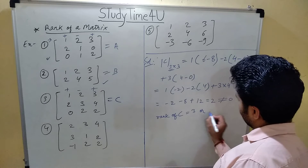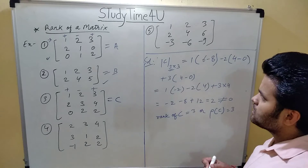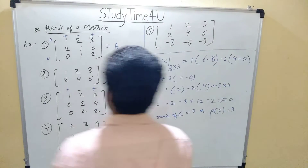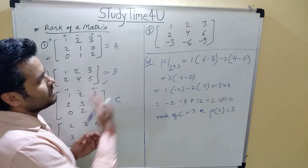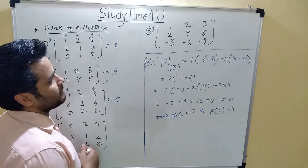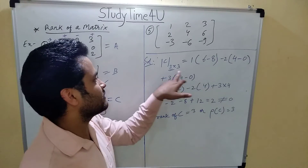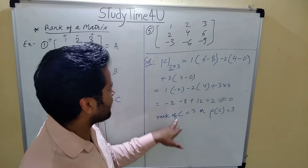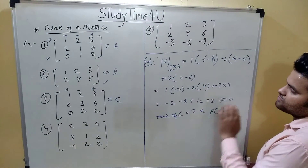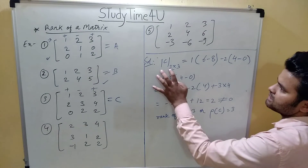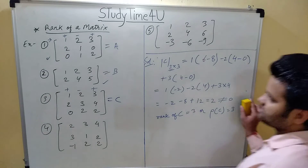From this example, whenever we solve the determinant we first find the highest possible minor of that matrix. If we are not getting 0, then that order is considered as the rank of that matrix. Since we did not get 0, rank of C equals 3.